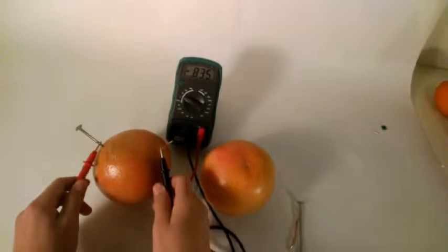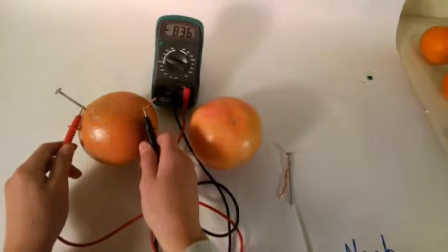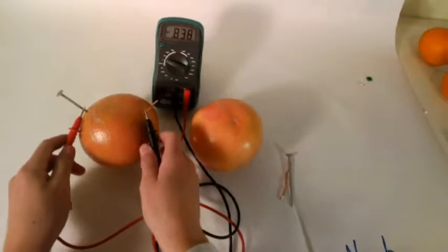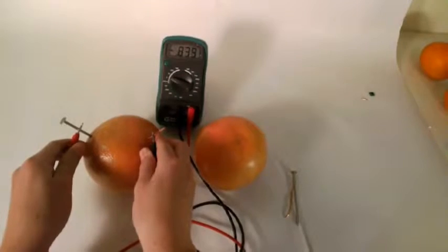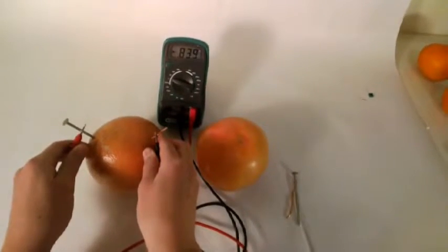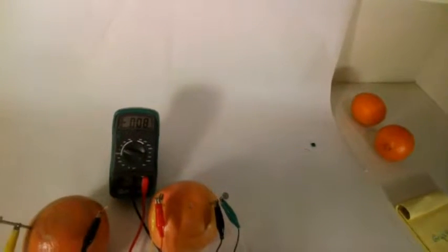Alright, so the grapefruit is producing 8.30—hang on—looks like 8.39 volts, or 0.839 volts. So now I am hooking up my grapefruit clamps to the prod, and it looks like it's only producing 0.092 volts.